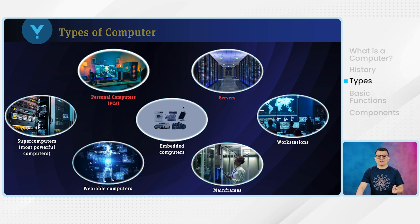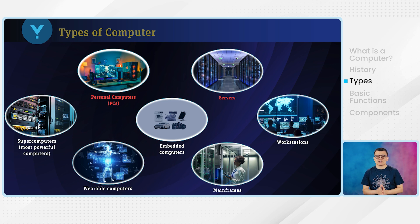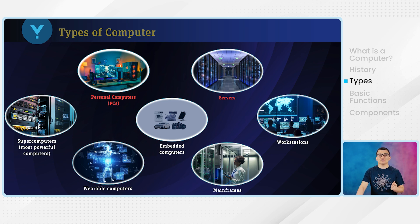And besides the mainframes, as you can see here, we have wearable computers and embedded computers — they are small-size computers. Wearable computers are computers that you can wear on your body. Embedded computers are computers that are integrated into other devices, such as cars, home appliances, and medical equipment. And lastly, we also have supercomputers — the most powerful computers in the world, with the highest processing speed and storage capacity. They are used for scientific simulations, weather forecasting, and other complex applications.